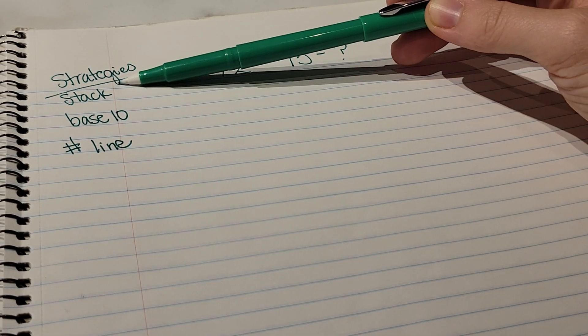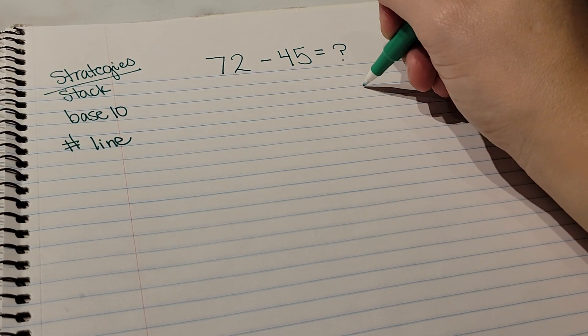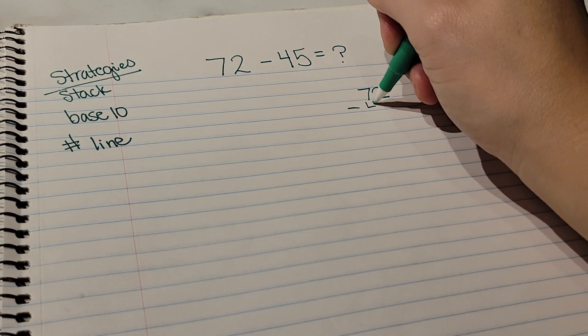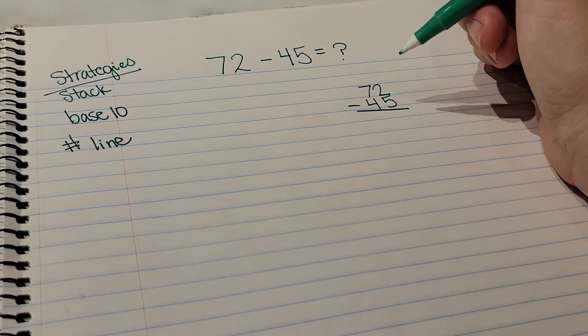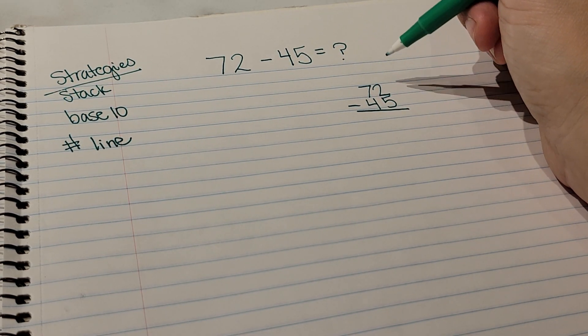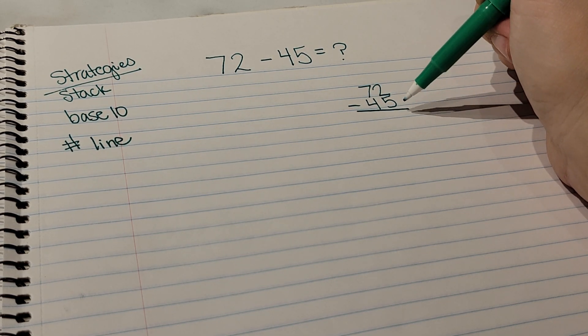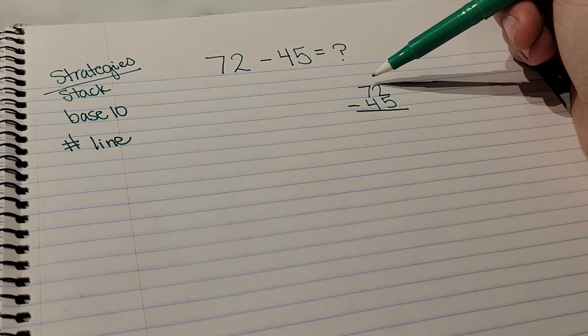So let's start with the stacking strategy. We're going to do 72 minus 45. We have a little chant so that they set up their equation correctly. It goes: stack them up, stack them up, big one on top, draw your line, check your sign.